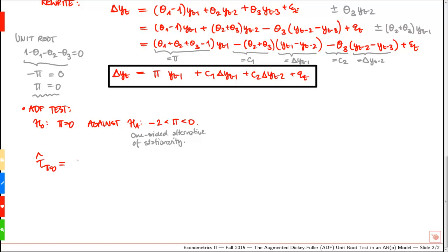The test statistic is given by tau for pi equals 0 hat, that's the estimated test statistic, and it's just equal to the usual t-test, which is the estimate of pi divided by the standard error of pi hat. Note that this test statistic is usually reported by all the standard econometric software as the t-test on the coefficient pi.